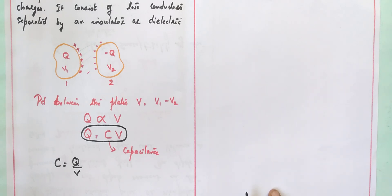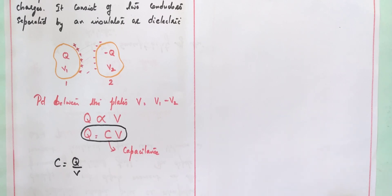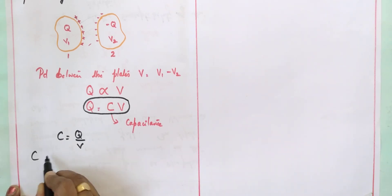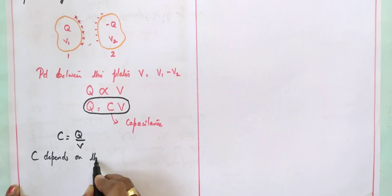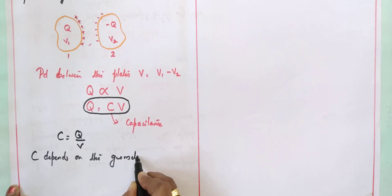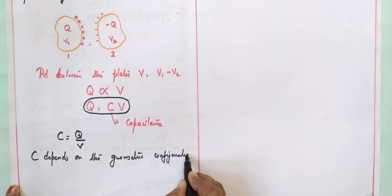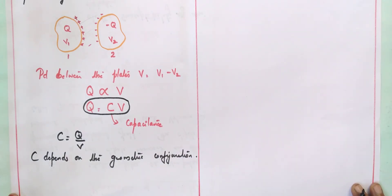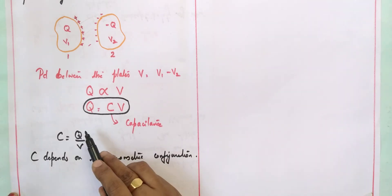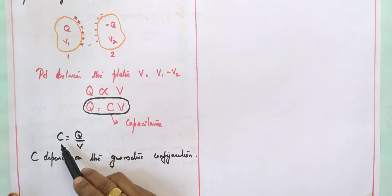As charge increases, potential difference increases, and hence capacitance remains constant. The capacitance of a capacitor is always constant — it does not depend on charge or potential difference. Capacitance depends only on the geometric configuration: it depends on the size of the conductors, the separation between the two plates, and the dielectric material used as the separator.